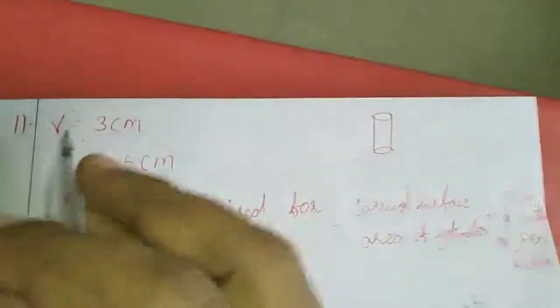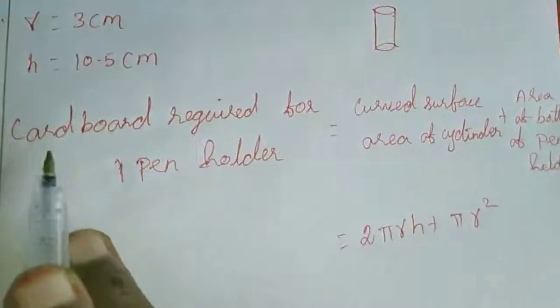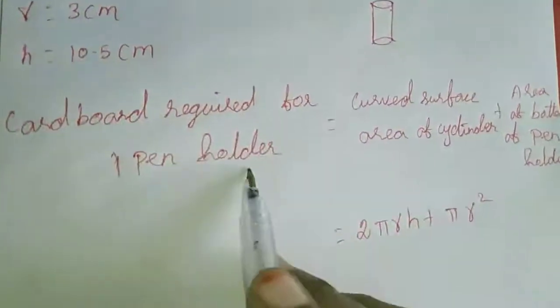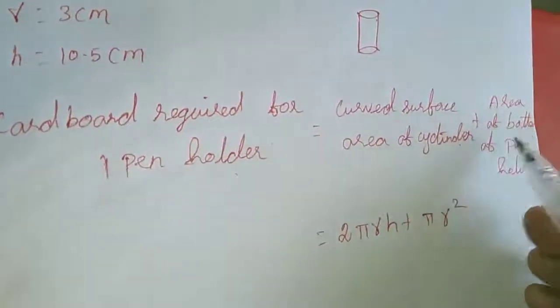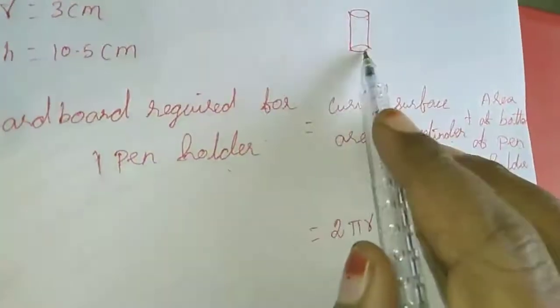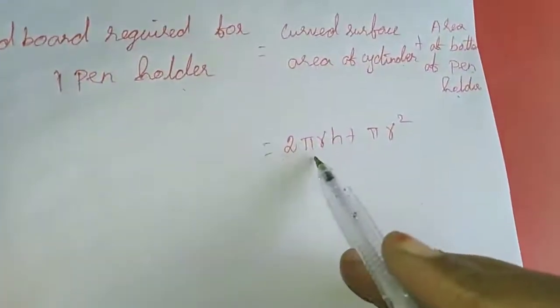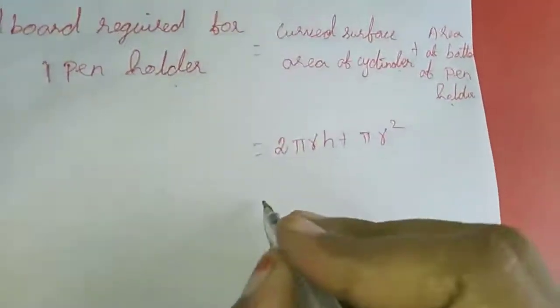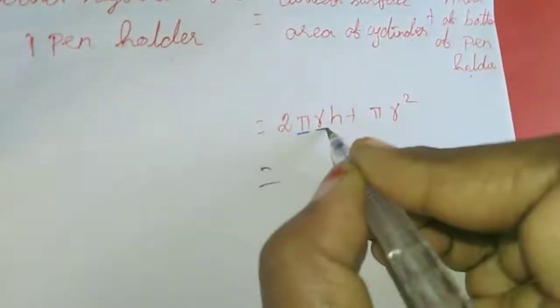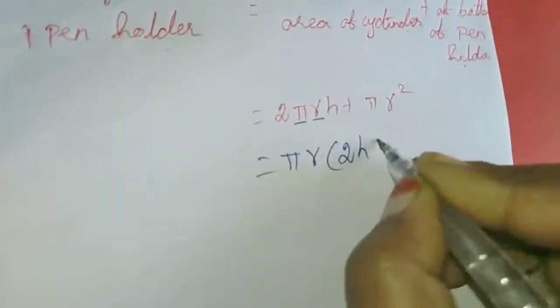We will work it out. R is 3 cm and height is 10.5 cm. Cardboard required for one pen holder: curved surface area of cylinder is 2πRH, and area of bottom of pen holder, which is circular, is πR².